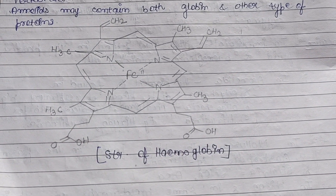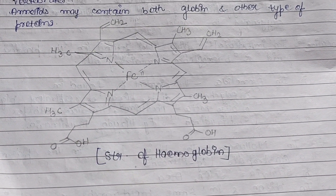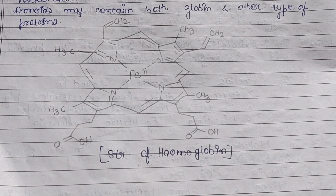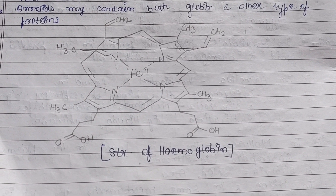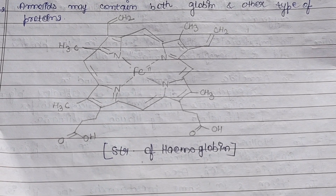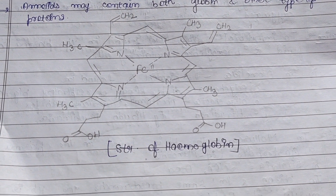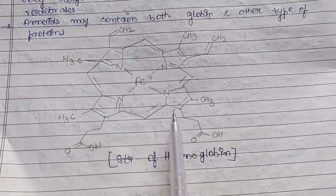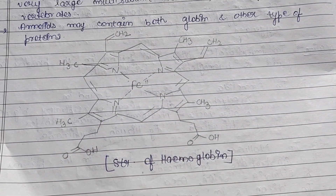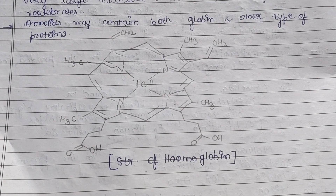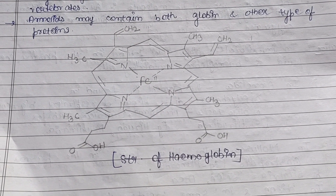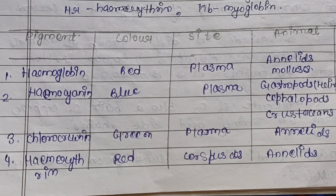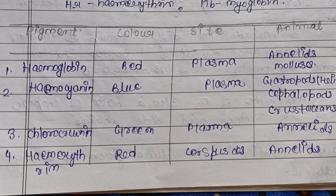Annelids may contain both globin — the proteinaceous part — and other protein components. The structure of hemoglobin includes the heme group, the porphyrin rings, the globin part, and the prosthetic group, as shown in the diagrammatic representation.